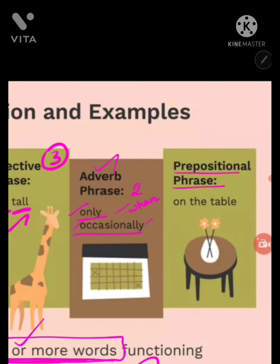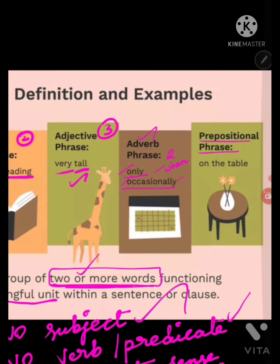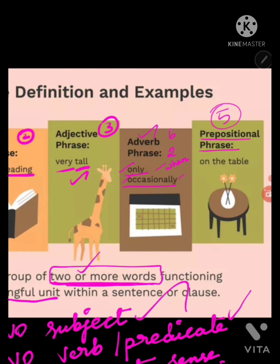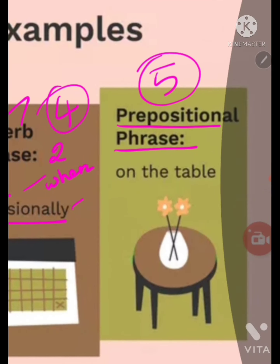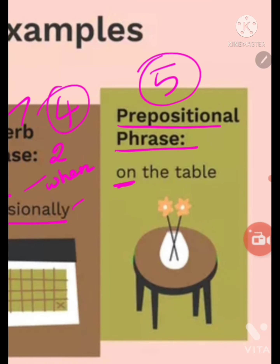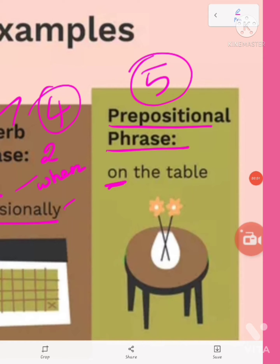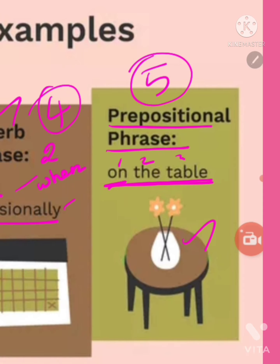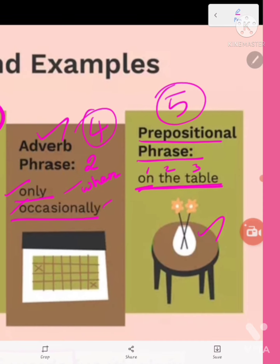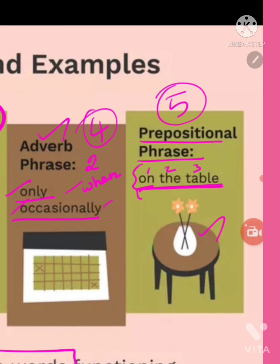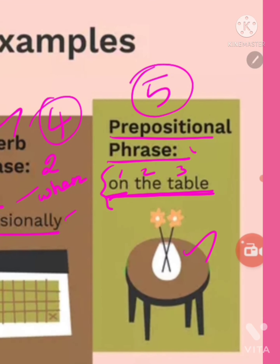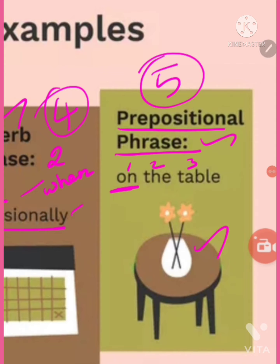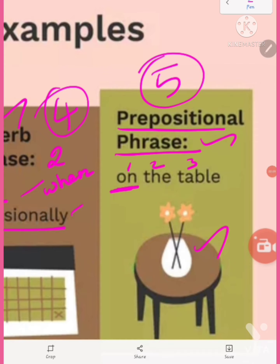The fifth type is the prepositional phrase. For example, 'on the table' — 'on' is a preposition. Here, three words come together to form a phrase. Since it begins with a preposition, this is a prepositional phrase.